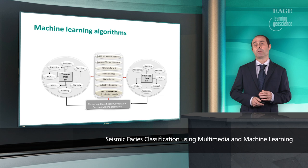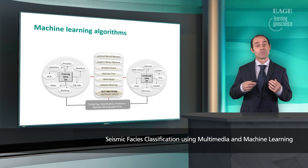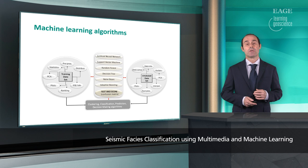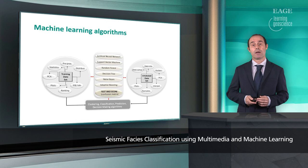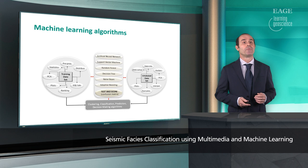This machine learning system includes many classification and clustering algorithms, many processing algorithms like principal component analysis, pre-processing algorithms, and so on. We can use artificial neural networks for classifying our data, but also support vector machine algorithms or random forest decision trees — many different types of algorithms.